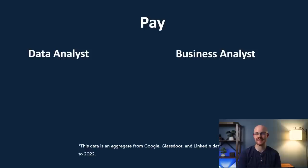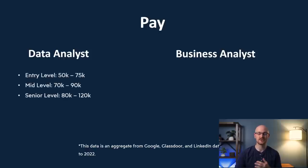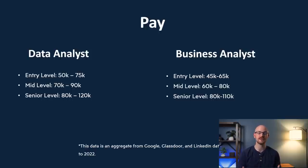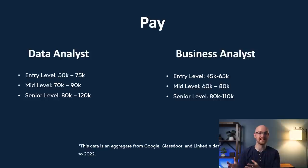Lastly, let's look at pay. For a data analyst: entry level is $50,000–$75,000, mid level is $70,000–$90,000, and senior level is $80,000–$120,000. For a business analyst: entry level is $45,000–$65,000, mid level is $60,000–$80,000, and senior level is $80,000–$110,000. These are averages and depend on location, education, and experience. Data analysts make a little more on average, but it really depends on the company.